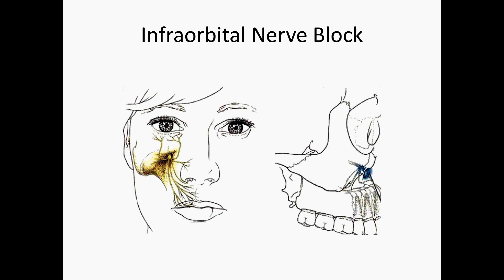As you can see in this picture, if you are able to accomplish an infraorbital nerve block, you can work not only on the teeth of a patient — everything other than the molars — but also if there is a lip laceration accompanying it, it will also be helpful in that scenario.